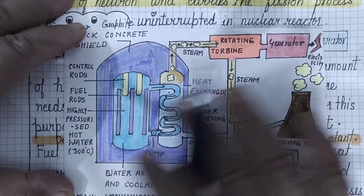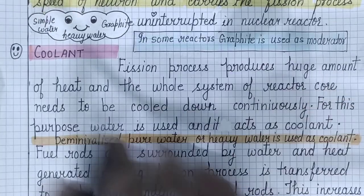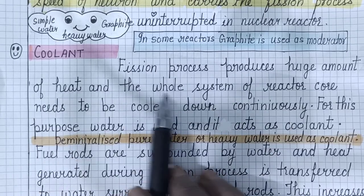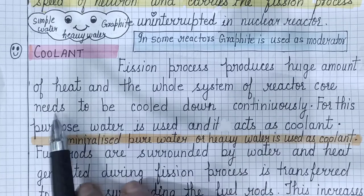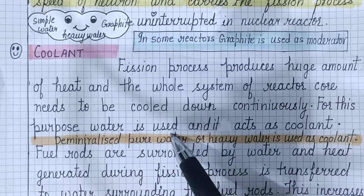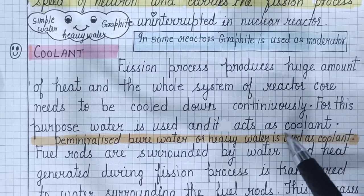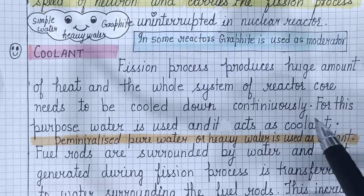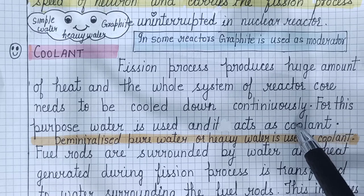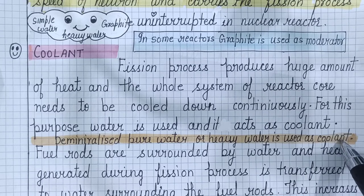Let us note down the important points. The fission process produces a huge amount of heat, and the whole system of the reactor core needs to be cooled down continuously. For this purpose, water is used as a coolant. Pure water or heavy water is used as a coolant.